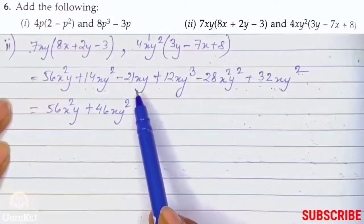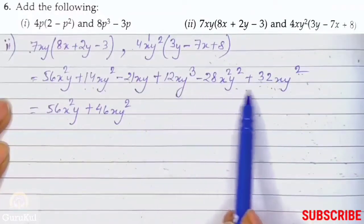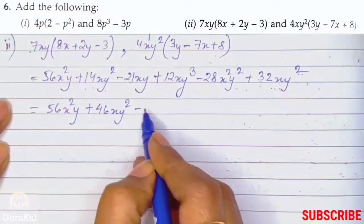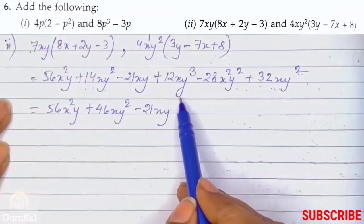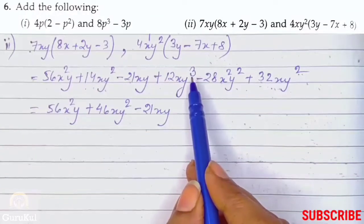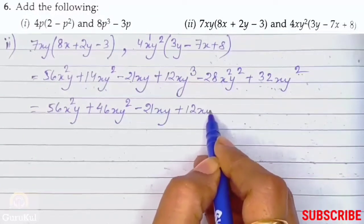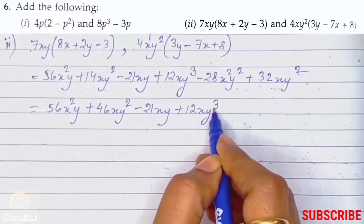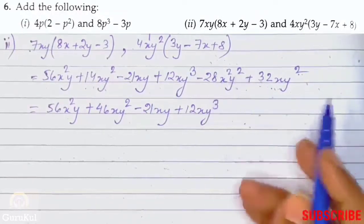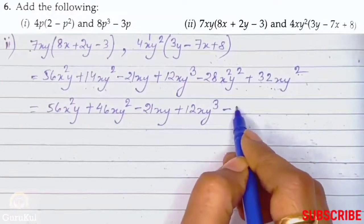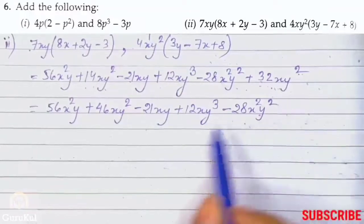Now xy — there is nothing else like it here, so we copy it straight away. Next is xy³ — there is also nothing else like it here, so we write plus 12xy³. Then comes x²y² — it is also alone, so minus 28x²y². That completes question 6 part 2.